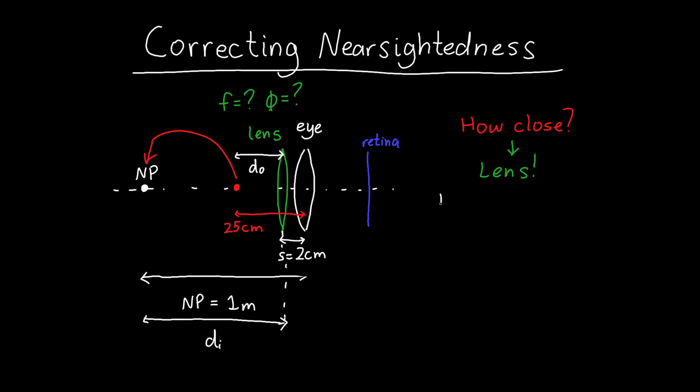And we can use that to figure out the focal length of the lens with our favorite lens imaging equation. 1 over F is equal to 1 over DO plus 1 over DI.